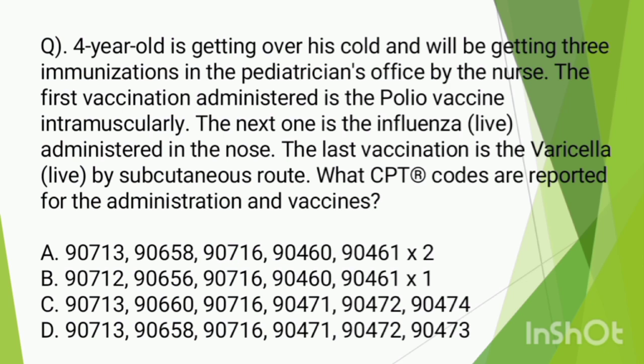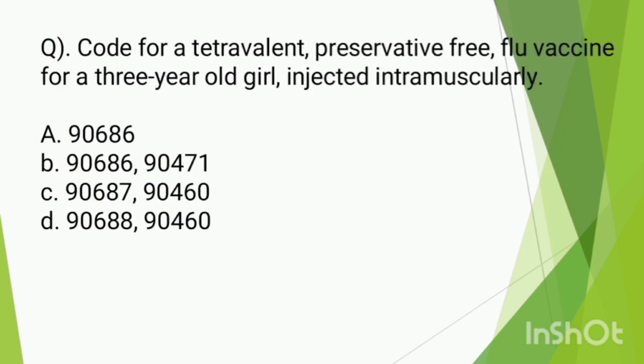Let's go to question number 7. Code for a tetravalent preservative-free flu vaccine for a three-year-old girl injected intramuscularly. The preservative-free flu vaccine is administered. We have to identify the administration route, which is intramuscular, and consider the patient's age for the administration code.